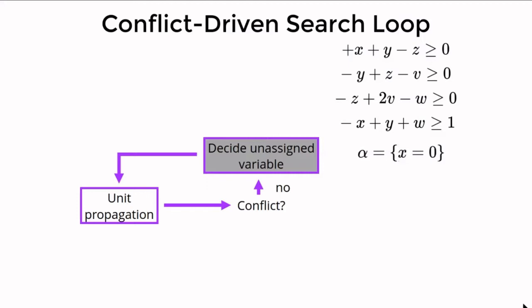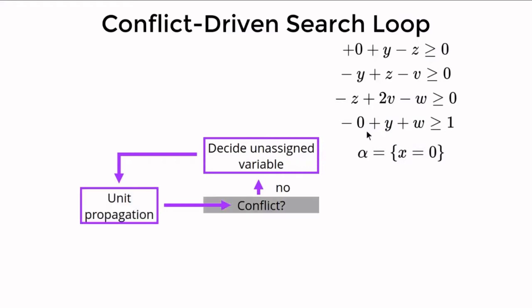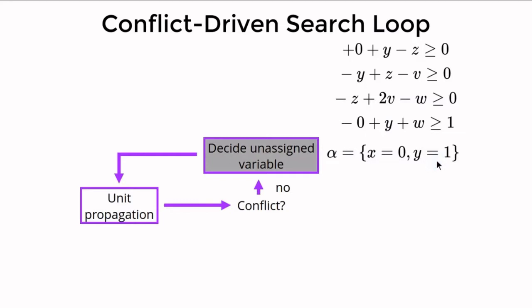In our case x is assigned to zero. I've simplified the constraints by replacing x with its assigned value. After this decision we check again for unit propagation, but none are implied by alpha. We check again for a conflict but no constraint is falsified, so we extend alpha with a new decision, this time assigning y to one. We again simplify the constraints and check for unit propagation.